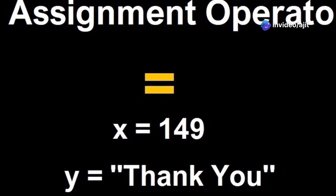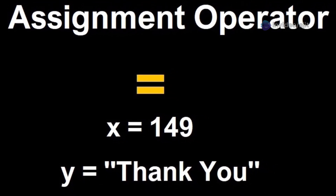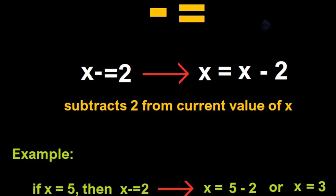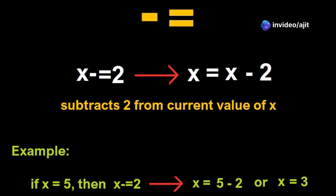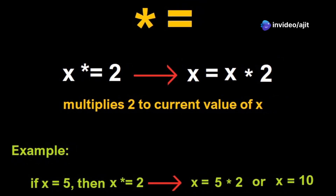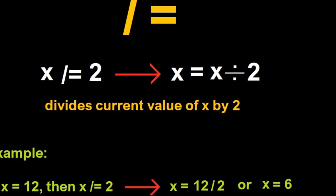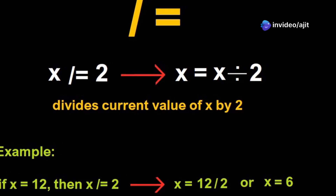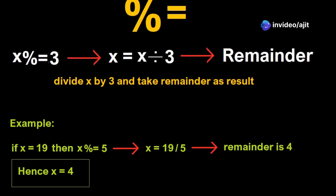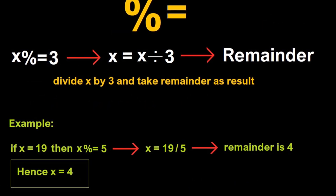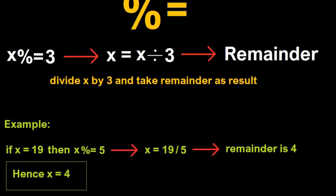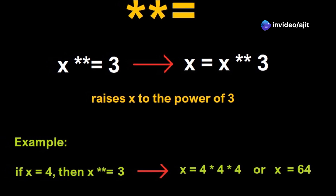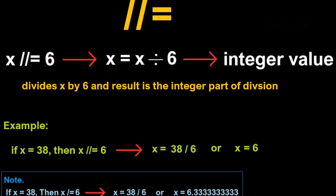Now on to assignment operators. The equal to sign assigns value to a variable. Plus equals adds data to the current value of a variable and then assigns the result to that very variable. Minus equals subtracts data from the current value of a variable and assigns it to that variable. Asterisk equals multiplies the given data value to the current value of a variable and assigns it to that variable. Forward slash equals divides data from the current value of a variable and assigns it to that very variable. Percentage equals takes the modulus of the current value of a variable using given data and assigns the remainder to that variable. The double asterisk equals raises the value of a variable to the power of data provided and assigns the result to the variable. Double forward slash equals floor divides the value of a variable by data and assigns the result to the variable.